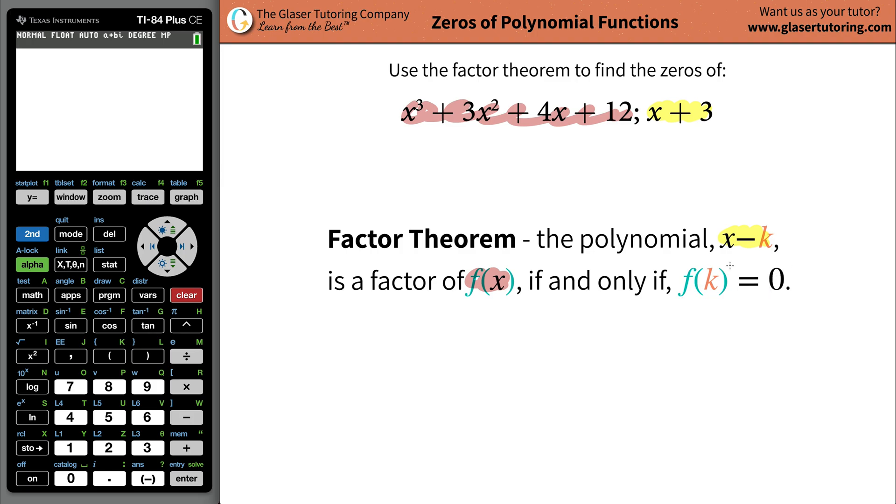In other words, let me rephrase this. This thing is going to be a factor of this thing if and only if this factor divides nicely into this polynomial with a zero remainder. Okay, that's what it's saying.